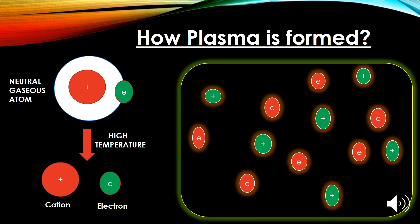We conclude that plasma is the fourth state of matter having a significant number of electrically charged particles. Although plasma is electrically neutral, it has remarkable applications because of its sensitivity to electrical and magnetic fields.